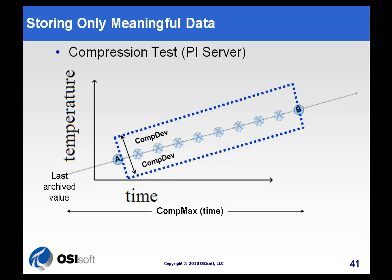Now, just as with the exception test, what controls the mechanism here of the compression test are some point attributes. The point attributes are going to be the CompDev, that's the compression deviation, that can also be specified as a percent of span. So you might also use CompDev percent instead of CompDev. And there's also an attribute called CompMax. That's the compression maximum time. And like the exception maximum, that basically indicates that when that much time goes by, we will go ahead and archive something, whether it's gone outside the dead bands or not.